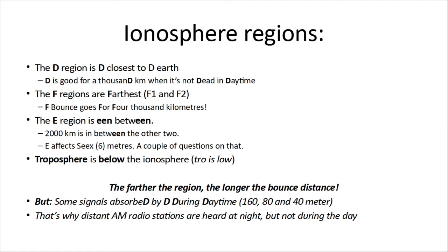We get 2,000 kilometers between the other two, and E affects six meters. Six meters is a more popular band these days and there'll be a couple of questions on that in the test. The troposphere is below the ionosphere — 'tro is low.' The farther the region, the longer the bounce distance. But during the daytime, the D layer can absorb some of the signals, so you may not get through to the higher regions of the atmosphere. That D section is where AM radio stations bounce at night, but not during the day.